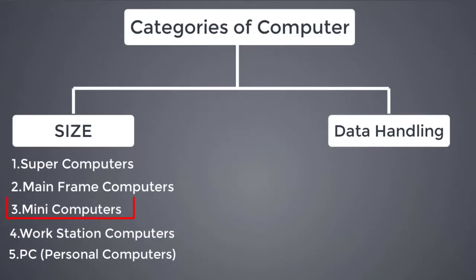Mini computers can handle 50 to 100 users at a time. Compared to supercomputers and mainframe computers, mini computers are smaller. They are used in commercial operations and managing larger PC tasks. Examples include PDP and Magnum systems.